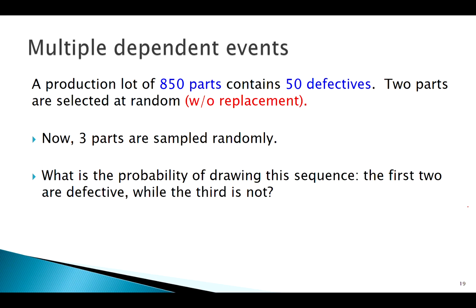Defective, defective, not defective. In other words, what's the probability it takes me three draws to get a part that's not defective? How am I going to figure that out? The first one's easy - there's 850 parts total, 50 are defective, so 50 out of 850. That's easy. Then I've got to figure out, given I got defective on the first, what's the probability of defective on the second?